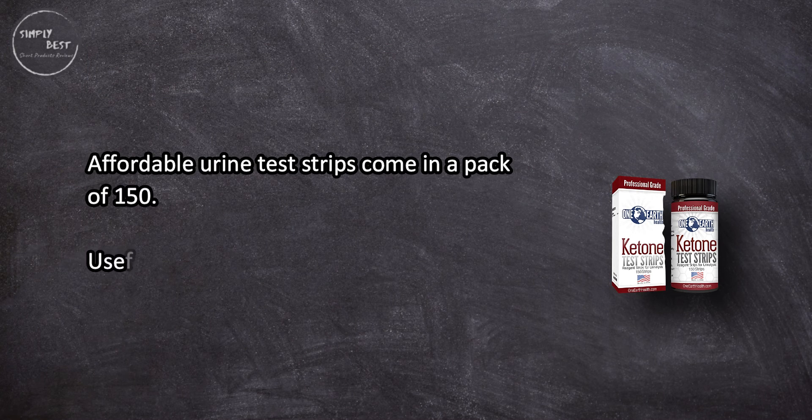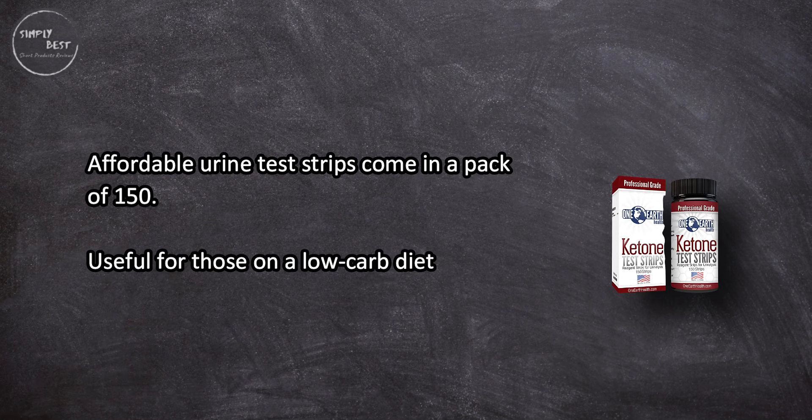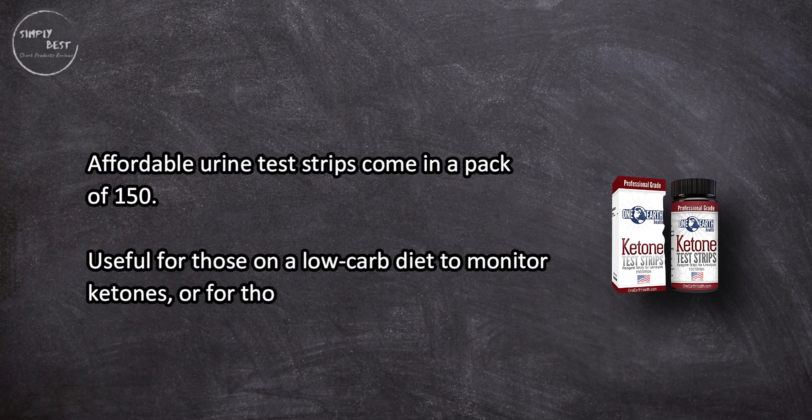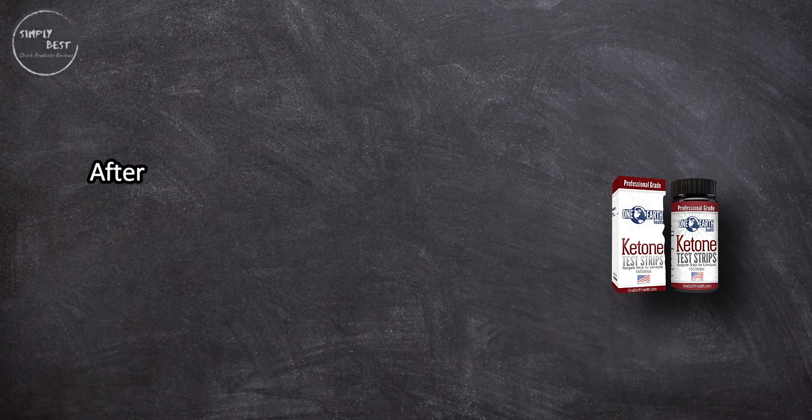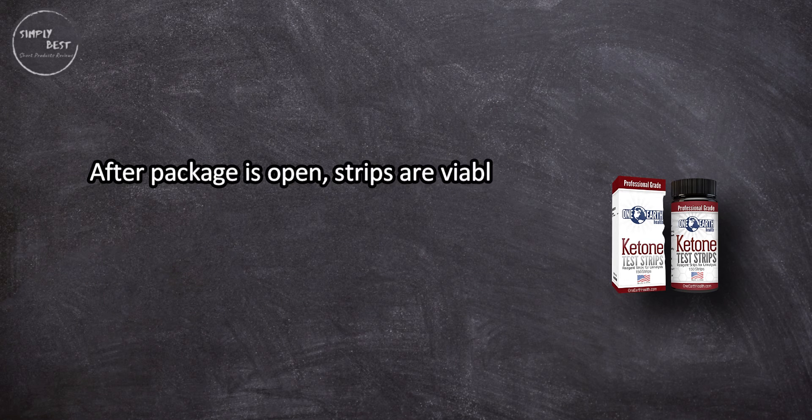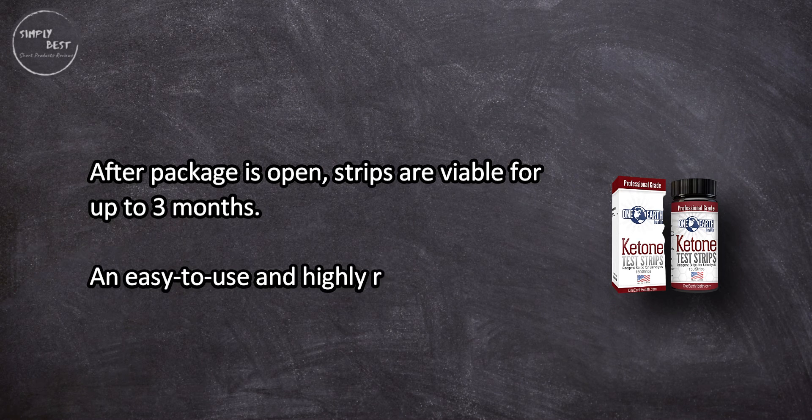At number one, One Earth Health Ketone Strips. Affordable urine test strips come in a pack of 150. Useful for those on a low-carb diet to monitor ketones or for those with diabetes to monitor their health. After package is opened, strips are viable for up to three months.